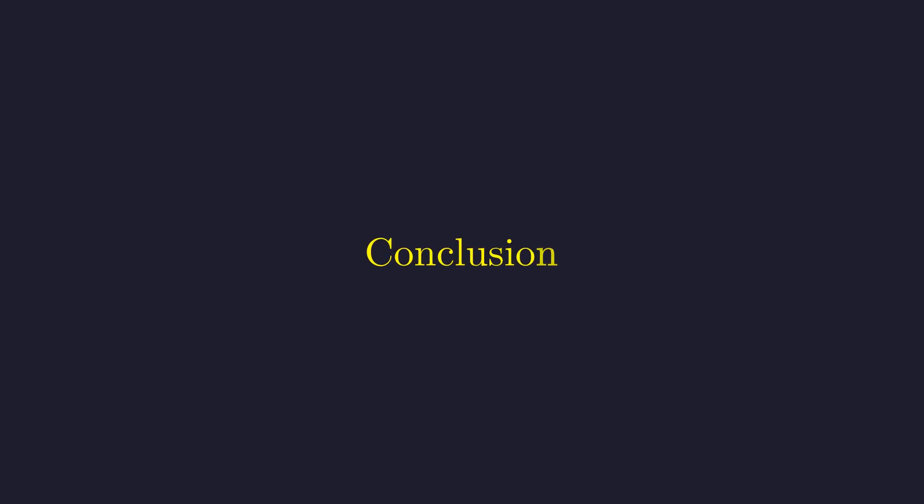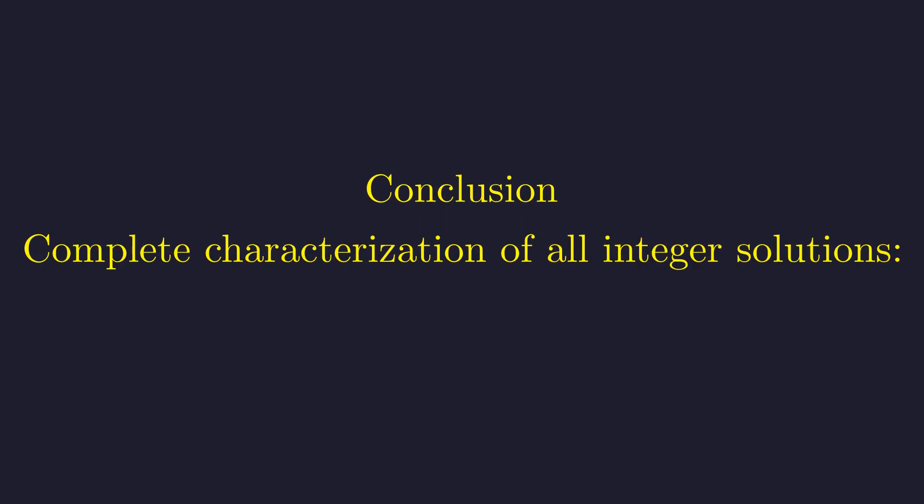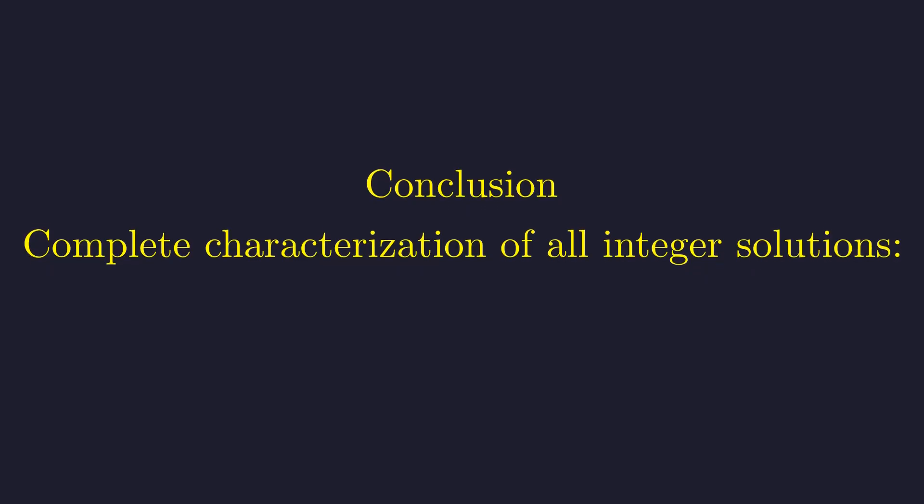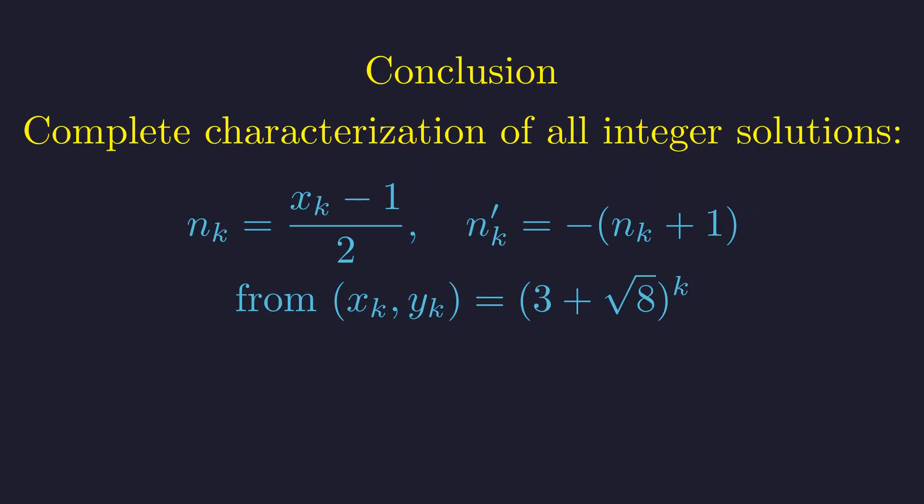In conclusion, a simple question about triangular numbers has led us to the deep structure of Pell's equations and number fields. We can now give the complete characterization of all integer solutions. All values of n come from this elegant structure: positive solutions from powers of 3 plus root 8 and negative solutions from the involution mapping.